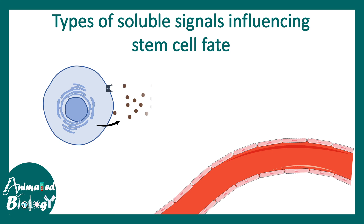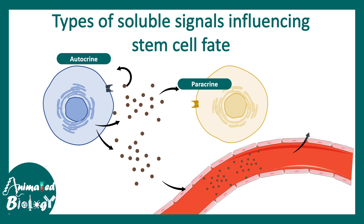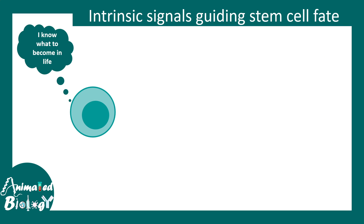How stem cells interpret these signals drives their fate and decides whether to regenerate or differentiate. The mode of signaling could be threefold: cells in near vicinity can signal via a paracrine mode; cells could be self-stimulating via an autocrine mode; and rarely it could be endocrine, where the cells are far apart.